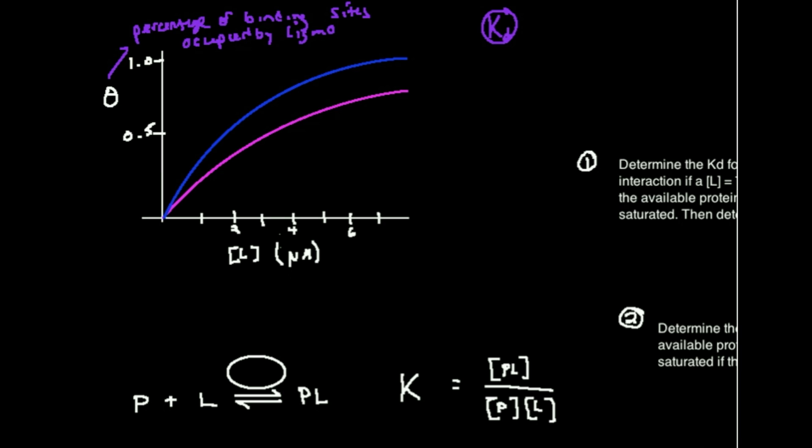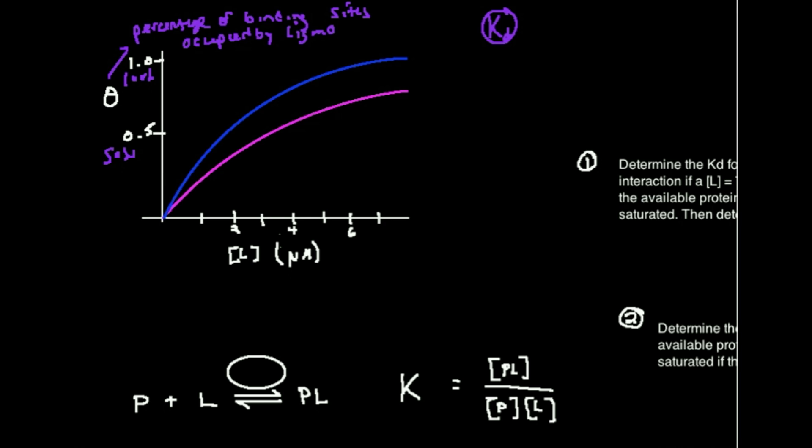So if theta was 0.5, or 50%, one is also 100%. If theta was 0.5, that means 50% of all available binding sites are occupied by the ligand, and 50% are not. If theta was 30%, then 30% of those available binding sites are occupied by the ligand, and 70% are what we call free. They're free binding sites, they don't have anything bound. And you can actually plot through various concentrations of ligand, what happens to the percentage of those binding sites that become occupied. It turns out that that relationship is actually not linear, it's actually hyperbolic.